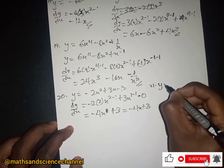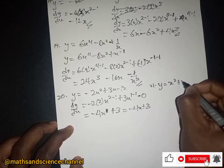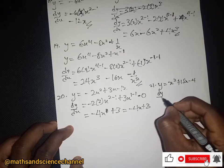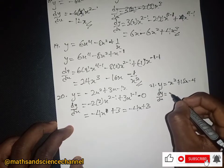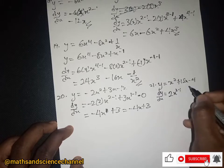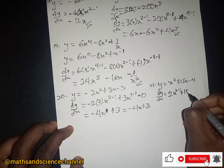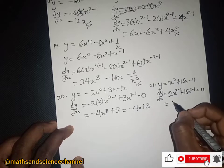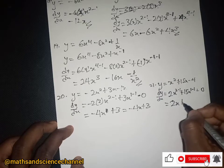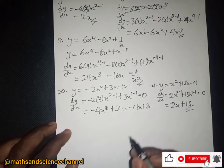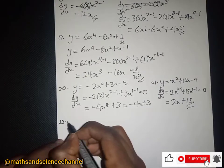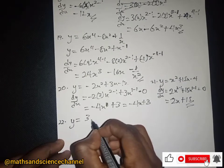Example 21: y equal to x squared plus 15x minus 4. The dy/dx will be — 2 times x to the power 1, then 15, then we subtract 1, differentiate the constant to get zero — so we just have 2x plus 15.